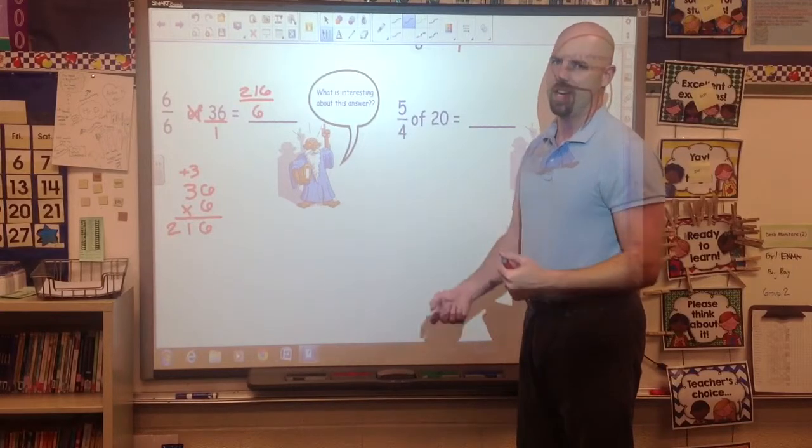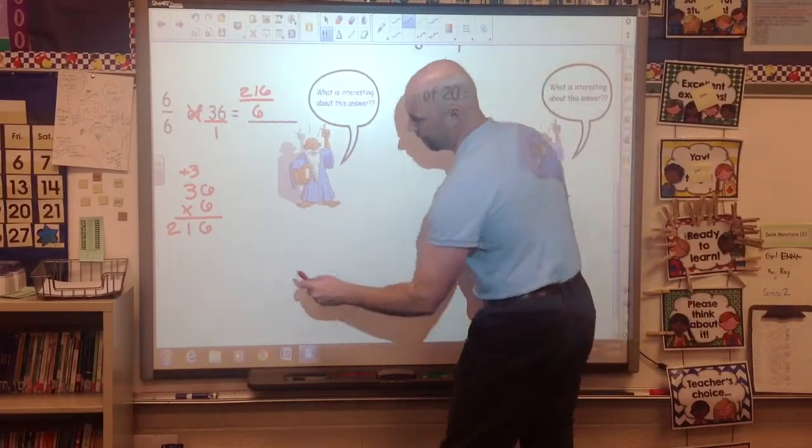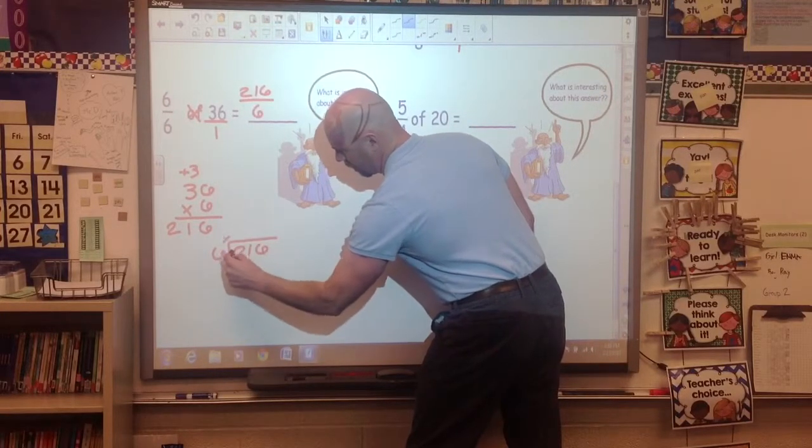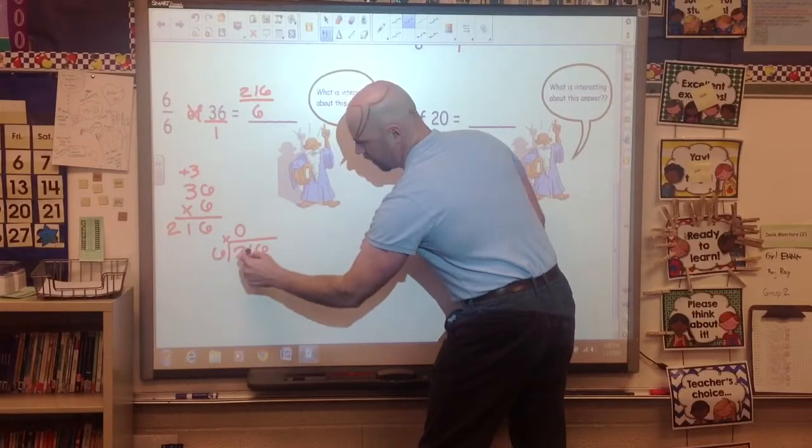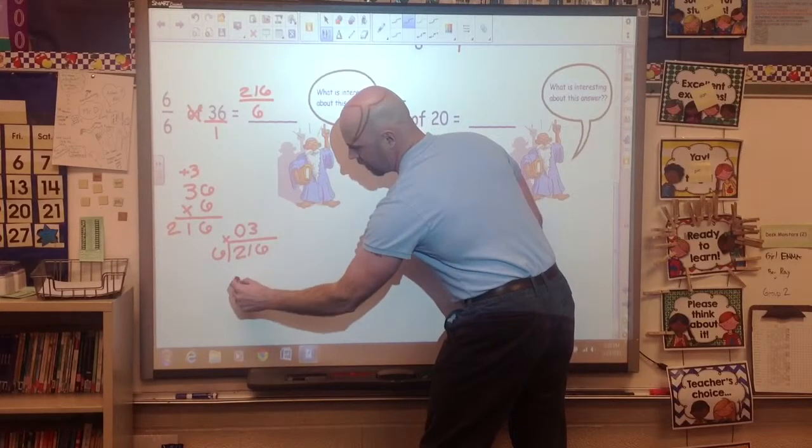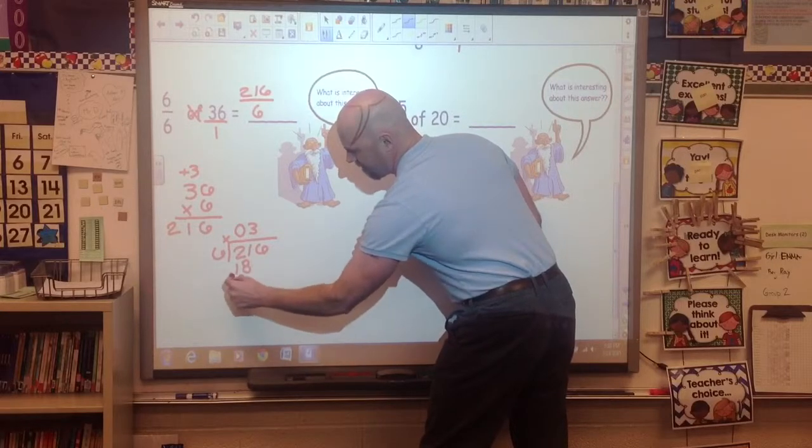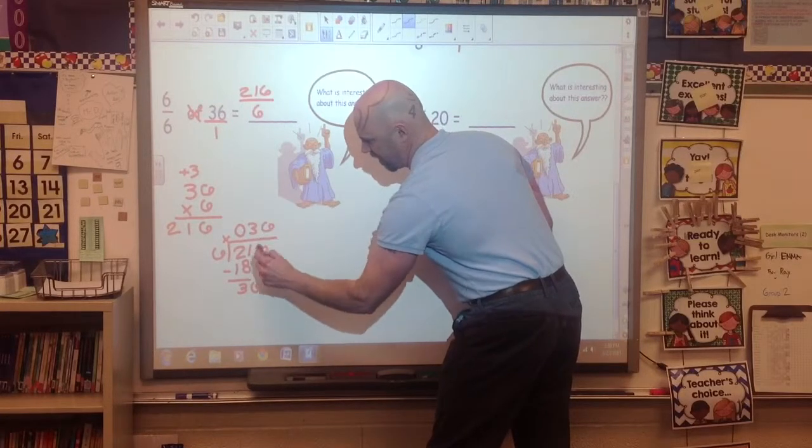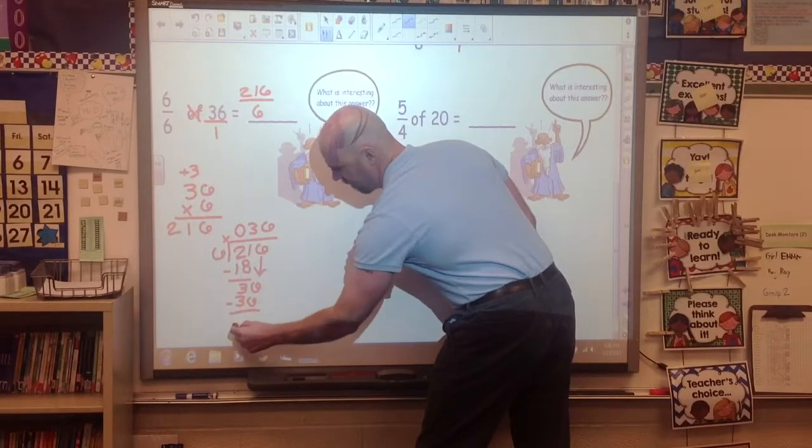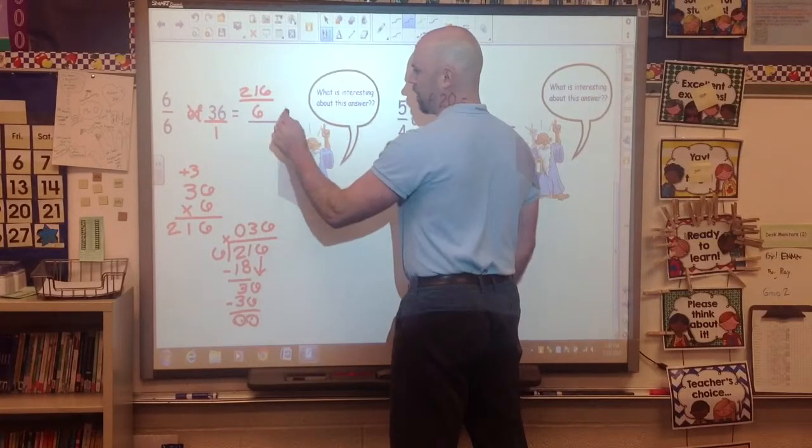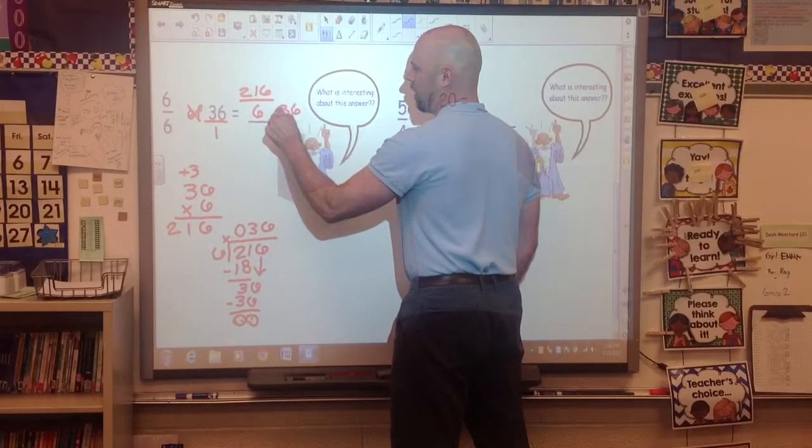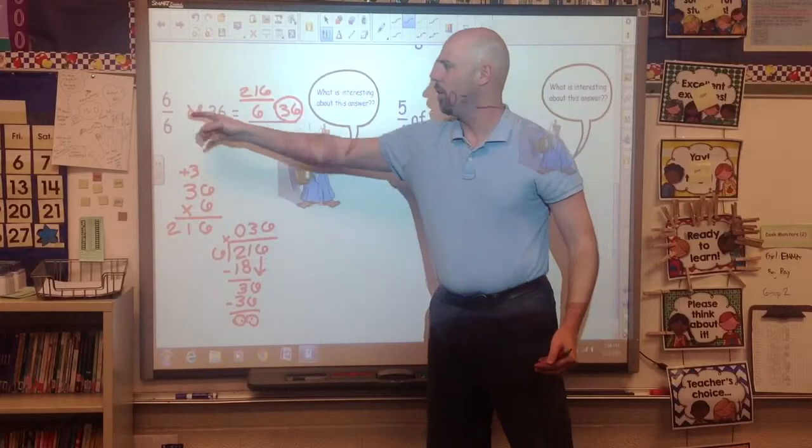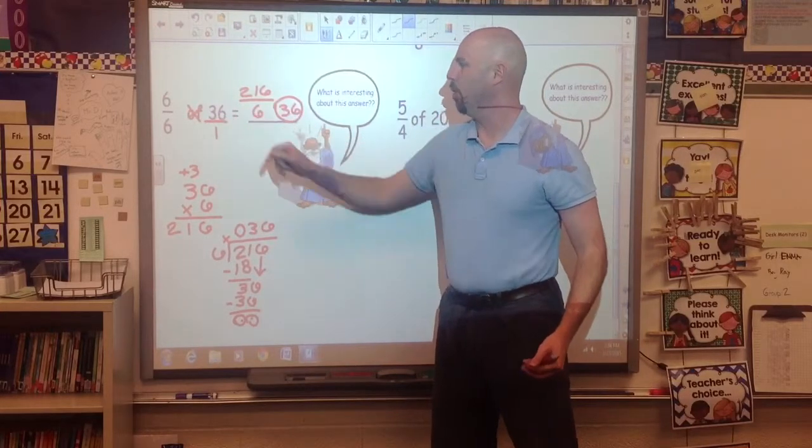And now, we've got to do 216 divided by 6 to turn this back into our whole number. 6 does not go into 2. 6 goes into 21 three times. 6 goes into 36 six times. And with no remainder, that is the same thing as 36, which makes sense. 6 sixths of 36 is 36. One whole pizza, and this is eaten another one whole pizza.